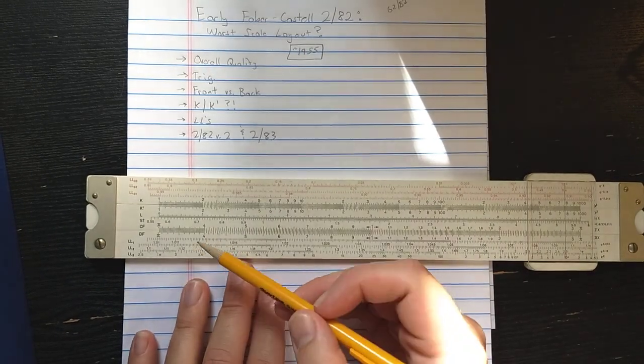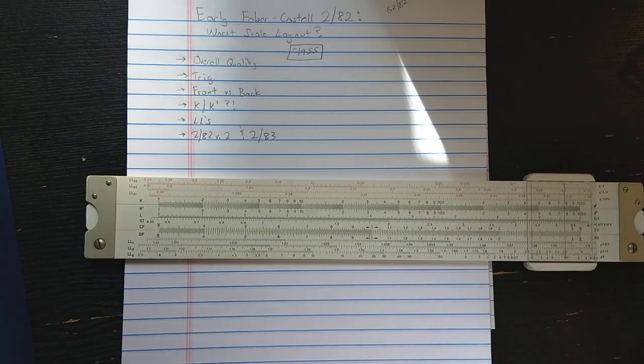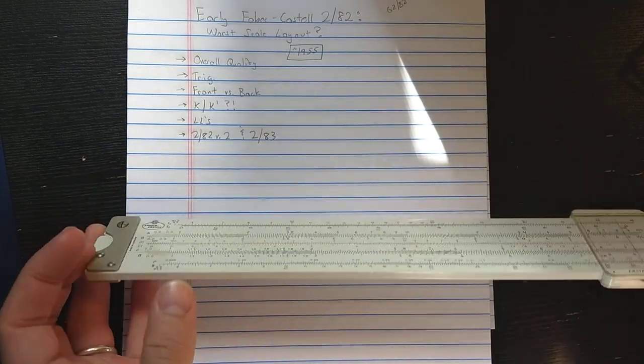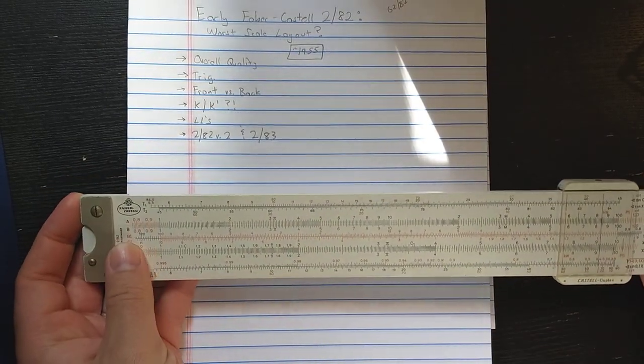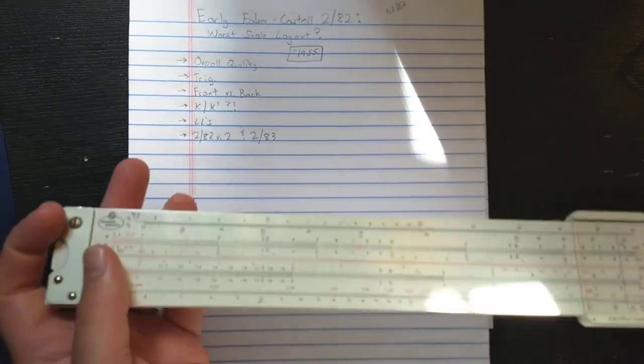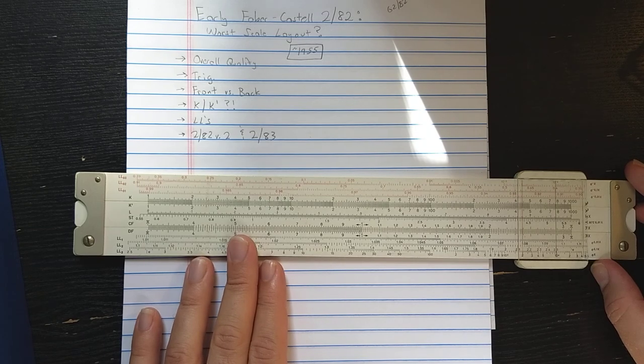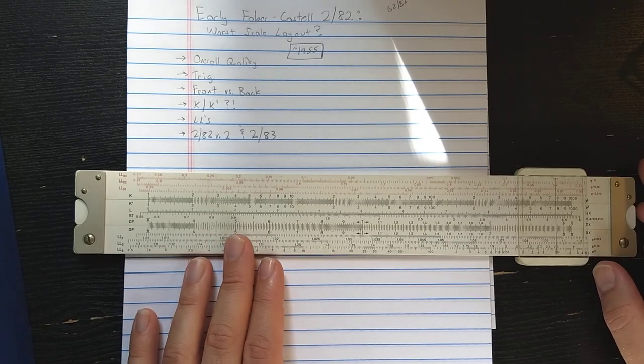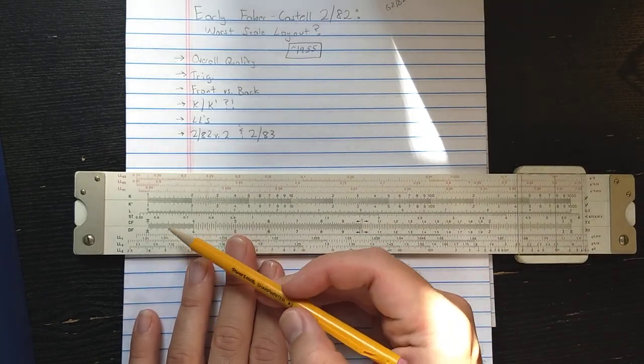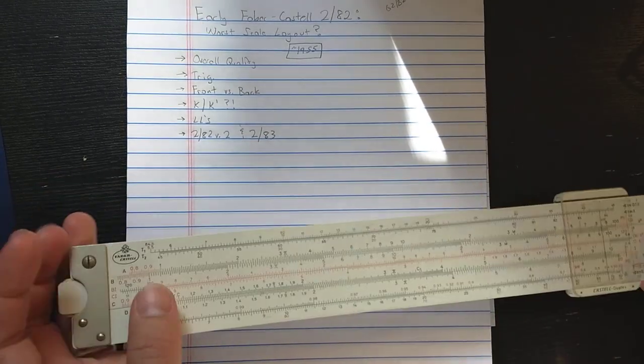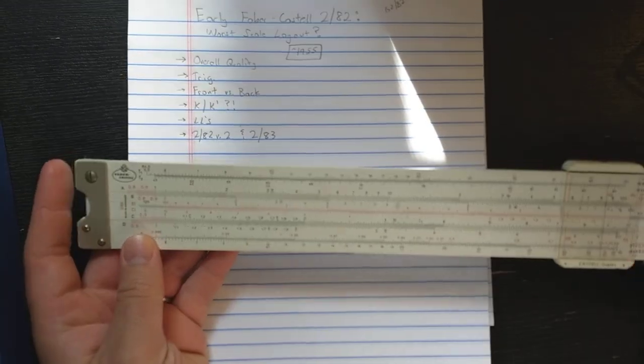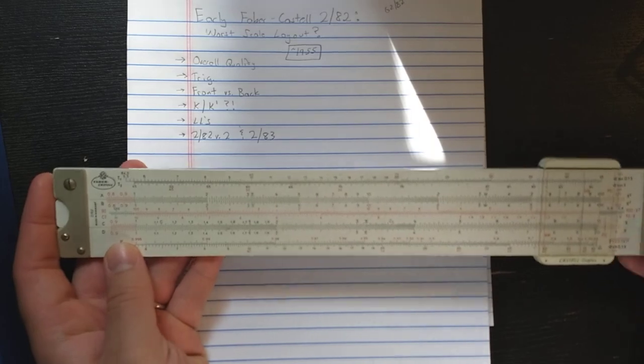So let's look at some of the odd features here. First of all, we have ST on the slide. And while it may seem nice that they threw in ST, they put it on the slide instead of the base on the reverse. So not only do you have to flip, but you have to change the way that you're doing your trigonometric solution because it's on the slide instead of the base. Okay. They threw in the folded scales, but they didn't throw in CIF.